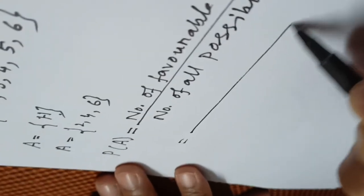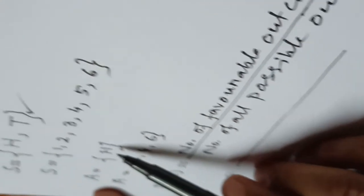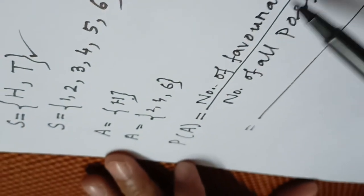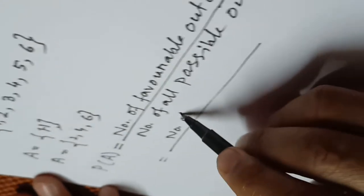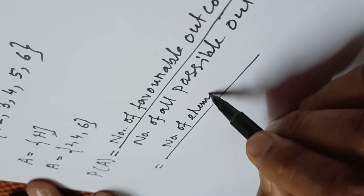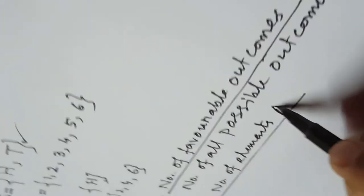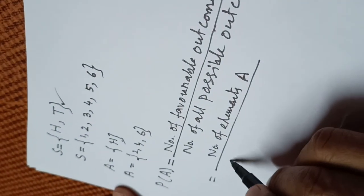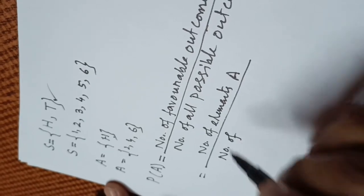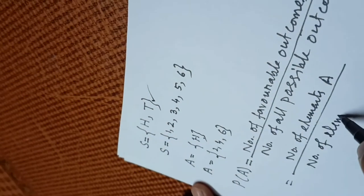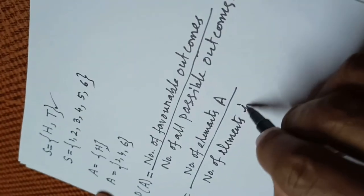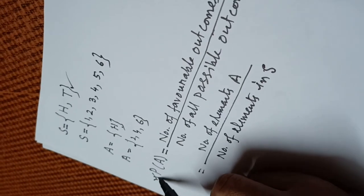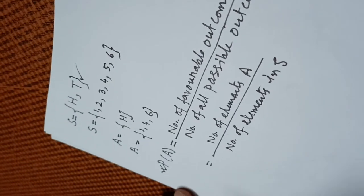Since an event is basically a set, it must contain some elements. The number of favorable outcomes means the number of elements in event A, and the total number of all possible outcomes means the number of elements in the sample space S. This is the mathematical formula to calculate the probability of an event.